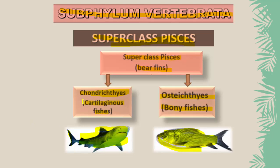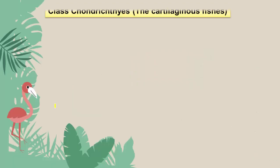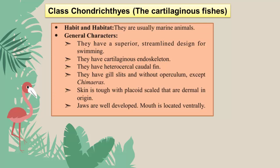In this video I am going to explain some characters with respect to Chondrichthyes, or cartilaginous fishes. Class Chondrichthyes of superclass Pisces includes all the cartilaginous fishes. Chondrion means cartilage — their endoskeleton is made up of cartilage, hence they belong to class Chondrichthyes. They are available in salt water, i.e., marine water.